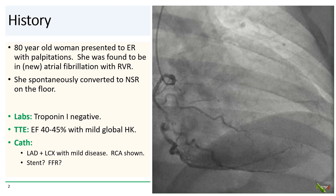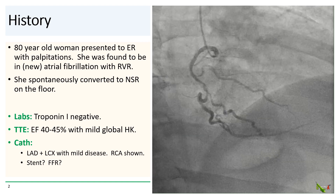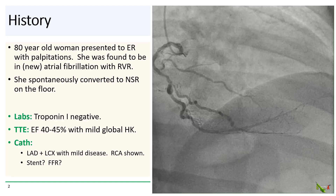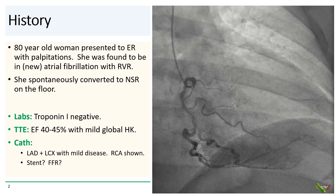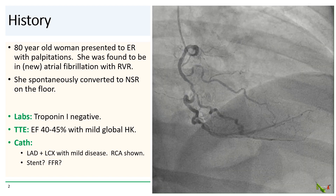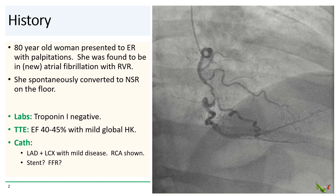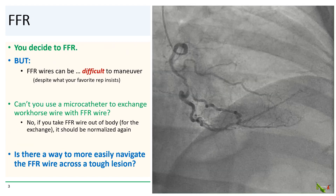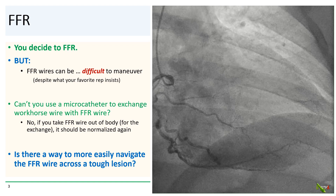So what do we do with this? She does have some dyspnea but otherwise has no clear angina. Do we stent this, or should we FFR? So we decide to FFR.